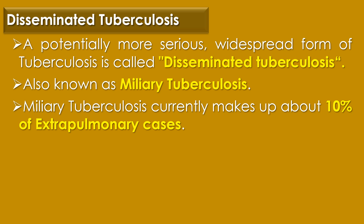The third clinical disease caused by Mycobacterium tuberculosis is disseminated tuberculosis. This is a potentially more serious, widespread form of tuberculosis, also called miliary tuberculosis. Miliary tuberculosis currently makes up about 10% of extra-pulmonary cases.